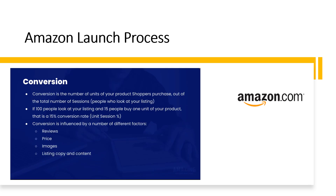Now, on to conversion. Conversion is the number of units of your product that shoppers purchase out of the total number of sessions, or people who looked at your listing. So if 100 people look at your listing and 15 people buy one unit of your product, that's a 15% conversion rate, or what Amazon calls a unit session percentage. Conversion is influenced by a number of different factors — primarily your reviews, your price, your images, and your listing copy and content.